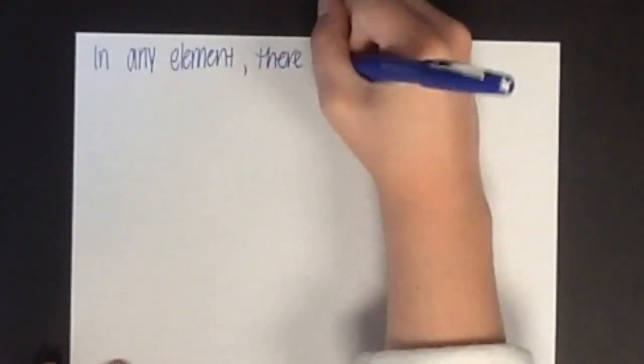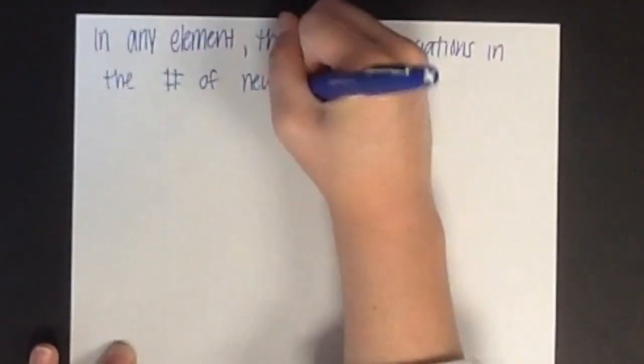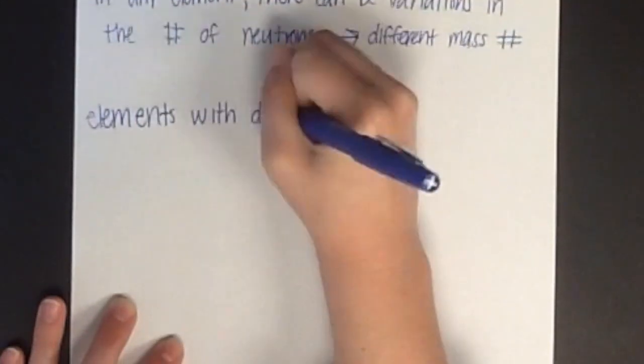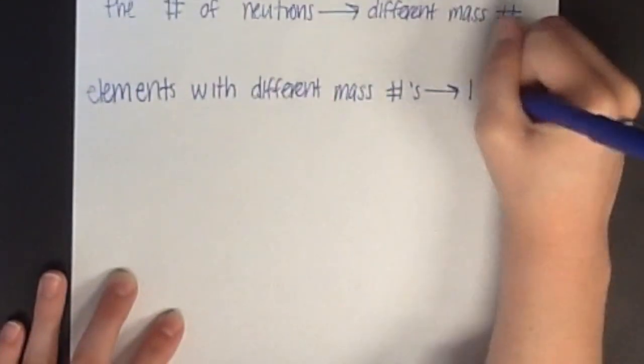In any element, there can be variations in the number of neutrons, which leads to a different mass number. Atoms of the same element with different mass numbers are called isotopes.